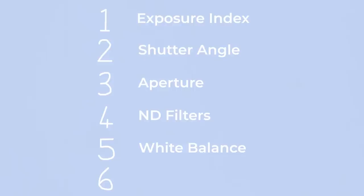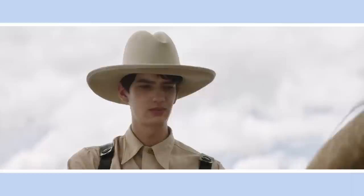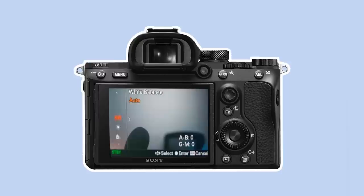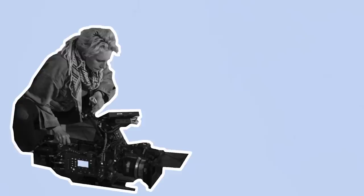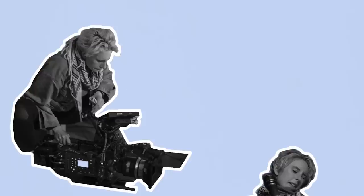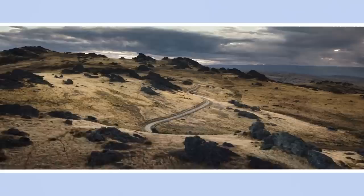So there we go: EI, shutter angle, aperture, ND, white balance, and frame rate — six camera variables that every photographer or cinematographer needs to know. If this all seems like too much technical information, the easiest way to get it into your head is to find a digital camera and start experimenting with settings by shooting. The more you practice, the more all of this will become second nature until you can manipulate all these settings unconsciously to capture that imaginative image you see in your head.